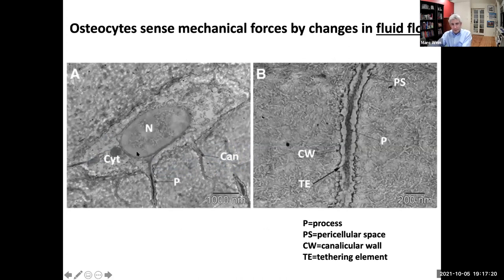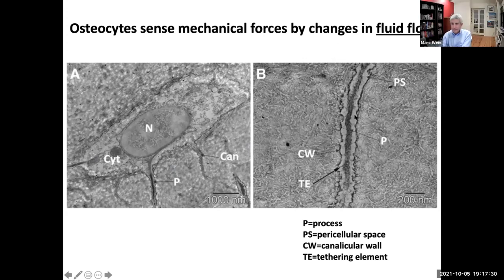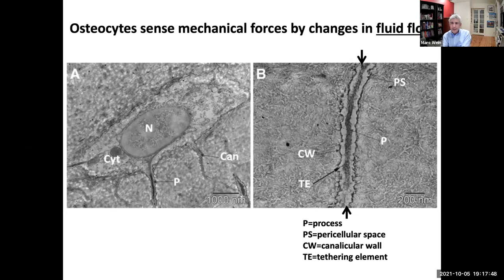It turns out that osteocytes are the cells sensing mechanical cues and relaying information about how much you're exercising and how much weight your bones are bearing to the cells on the bone surfaces. Zooming in on one of those osteocytes — remember they have processes coming out of the cell — those processes are surrounded by a little bit of fluid. Every time you take a step or jump up and down, this fluid around your osteocytes sloshes back and forth a little bit. It's really that fluid flow that the osteocytes are sensing, telling them that there's mechanical loading happening. When the cells sense that fluid flow, they talk to the osteoblasts and tell them to make more bone. This is how osteocytes sense mechanical forces and why it's so important to exercise to maintain strong, healthy bones.